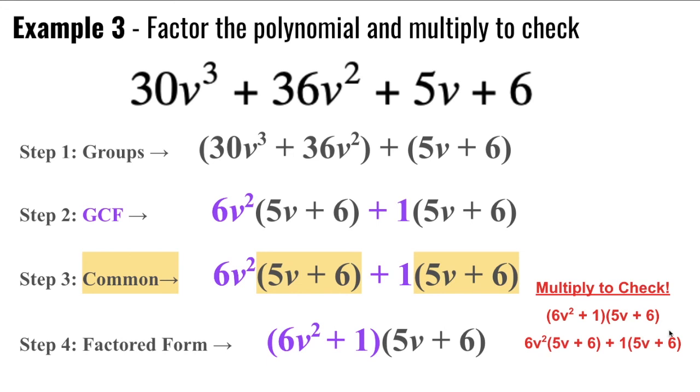1 times 5v is 5v, and 1 times 6 is 6. So since I ended with what I started with, I know that this was correct.